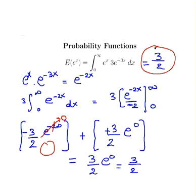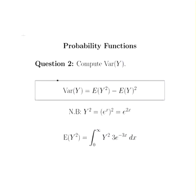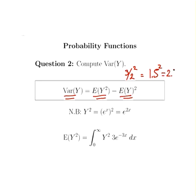That is our first answer. Now let's compute the variance of y. We use the formula: the variance of y equals the expected value of y squared minus the expected value of y, all squared. From earlier, the expected value of y is 1.5, so the expected value of y squared is 1.5 squared, which equals 2.25. Now we need to find the expected value of y squared, noting that y squared equals e to the power of x squared, which is e to the power of 2x.